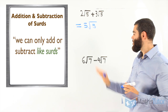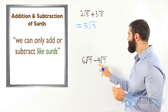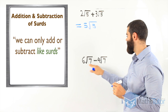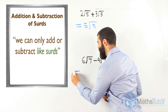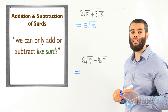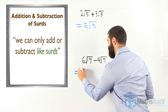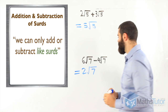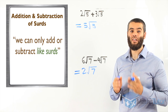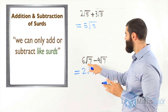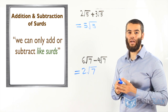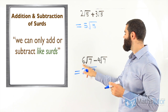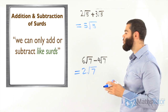Look at the next one: 6 root 7 take away 4 root 7. Are they like thirds? Yes, they are. So we can subtract. 6 take away 4 is 2 root 7. It's that simple. We're collecting like thirds — we make sure the thirds are the same and then we add or subtract.